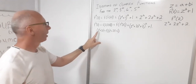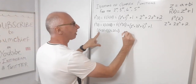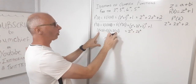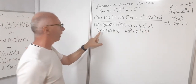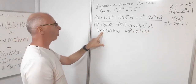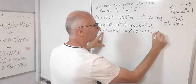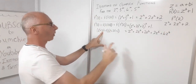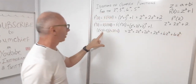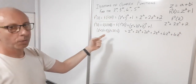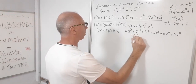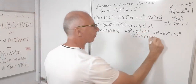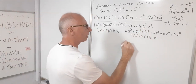We multiply (z⁴ + 2z² + 2)(z⁴ + 2z² + 2) and add 1 at the end. FOILing gives: z⁸ + 2z⁶ + 2z⁴, then + 2z⁶ + 4z⁴ + 4z², then multiplying through by 2: + 2z⁴ + 4z² + 4, and we must not forget to add the final +1.